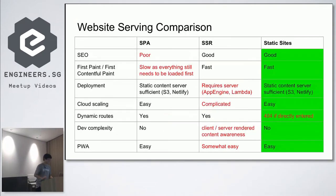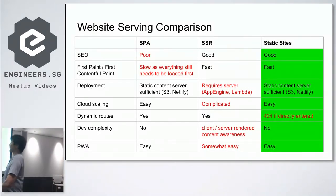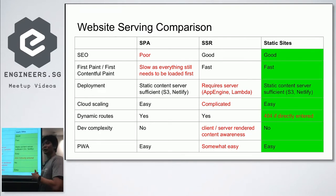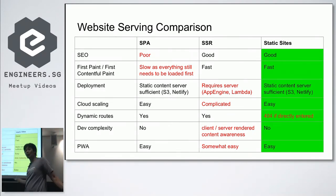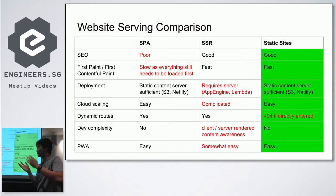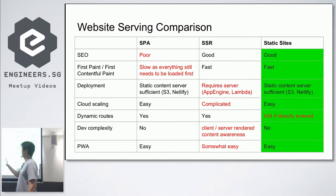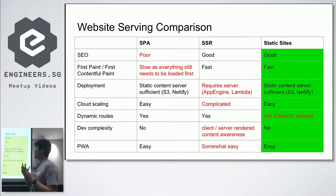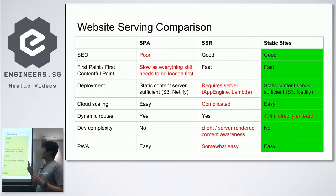SPAs are poor for SEO because the content shown is not easily understood by crawlers. They're also slow — especially with bigger applications where you have to load everything, and you can't fight the laws of physics. On the positive side, deployment is very easy: you just throw it to a static content server, scaling is easy, and PWA is also quite easy to do.